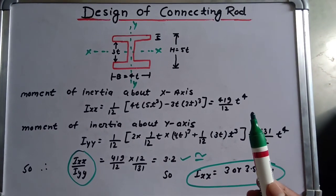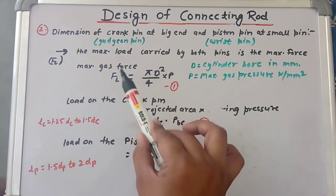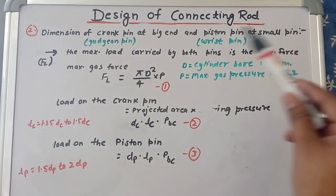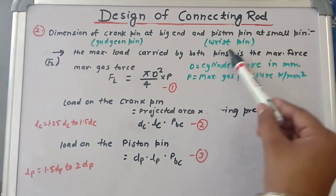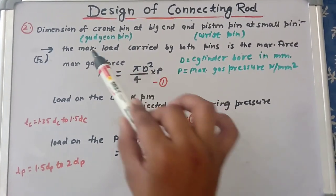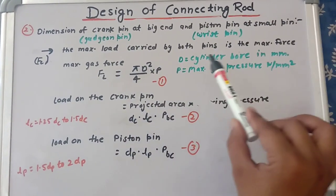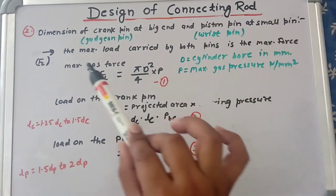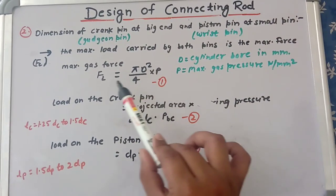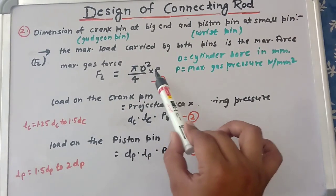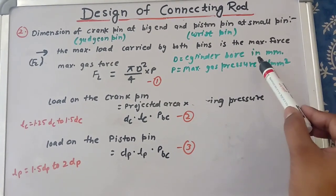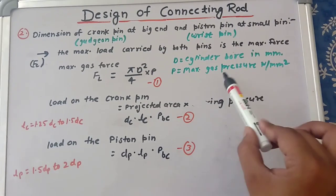Now we will find the dimensions of the crank pin at the big end and the piston pin at the small end. The crank pin is also known as the gudgeon pin and the piston pin is also known as the wrist pin. The most important thing to remember is that the maximum load carried by both pins is the maximum gas force, given by: Fl = (π·d²/4) · p, where d is the cylinder bore diameter and p is the maximum gas pressure.